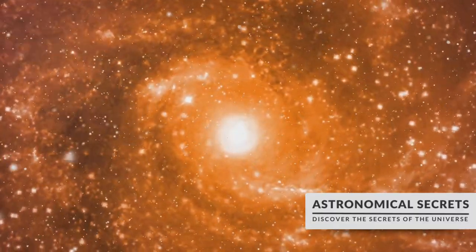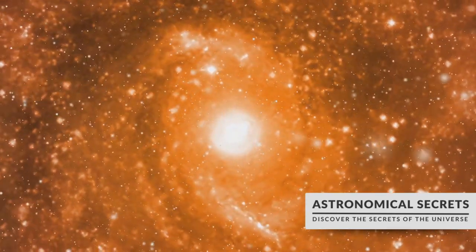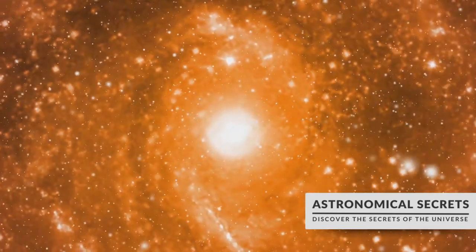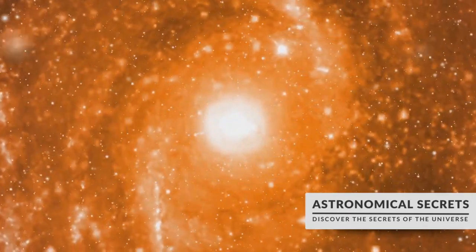Their spiral structure is not just aesthetically pleasing but also teeming with life-enabling conditions. Our solar system resides in one such arm of the Milky Way, the Orion Arm. We are approximately 26,000 light-years away from the galactic center, comfortably nestled in the galaxy's suburbs.